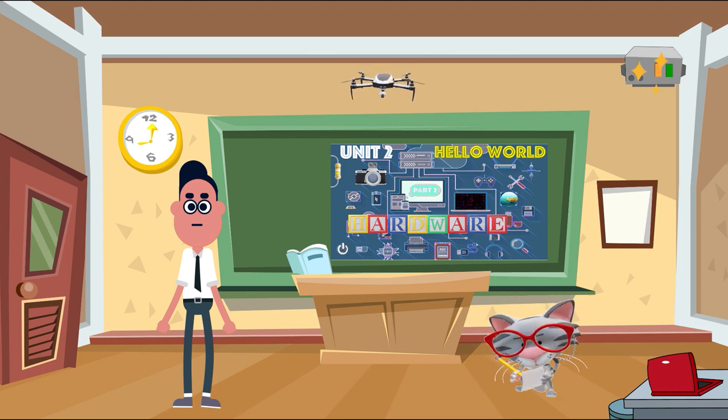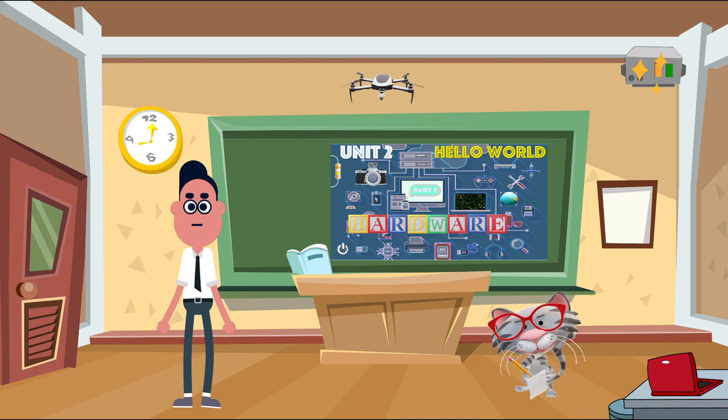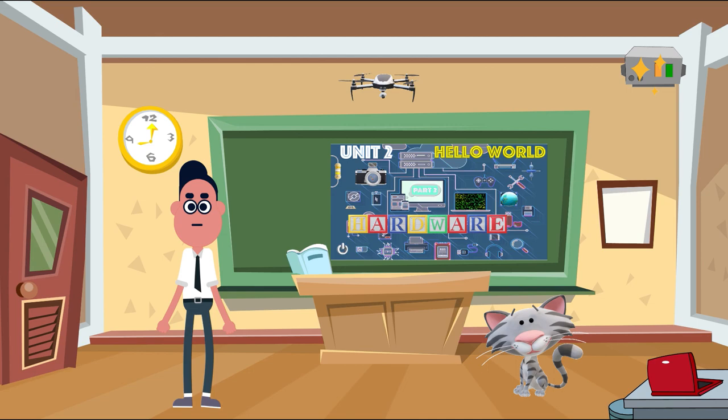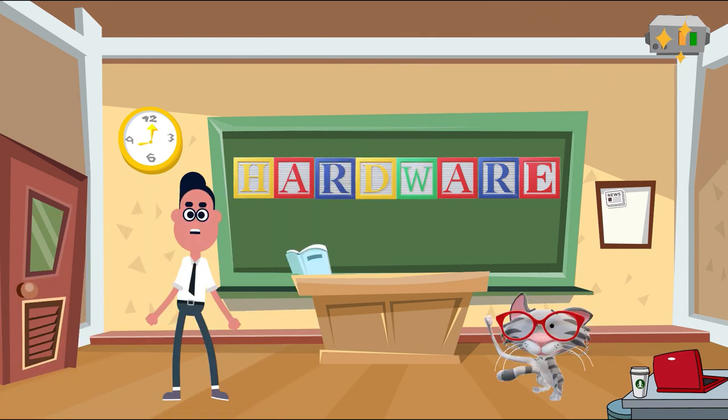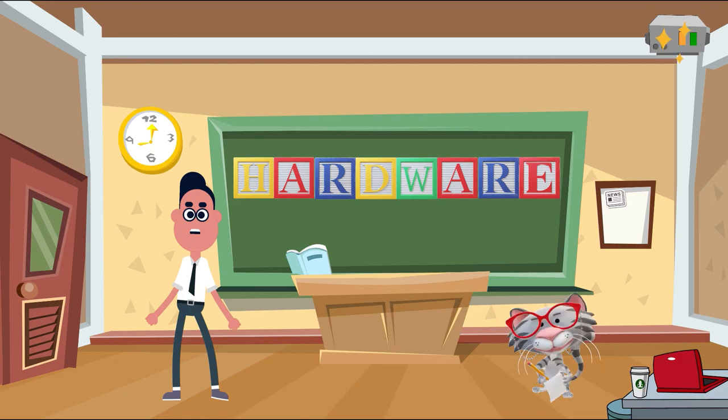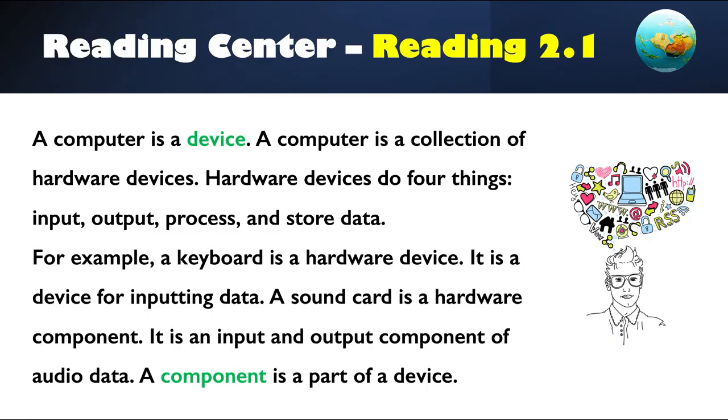However, we're going to recap that entertainment and go back over some of the stuff we went over in Unit One, partly to give you the answers and partly to help with your English practice. Let's take a look at hardware vocabulary. We looked at Reading last time, Reading 2.1, which explained that a computer is a device.